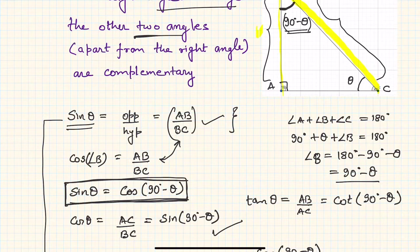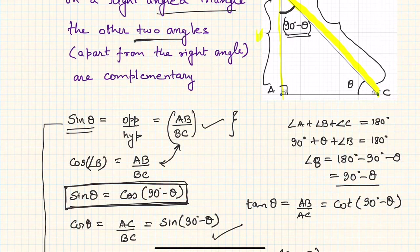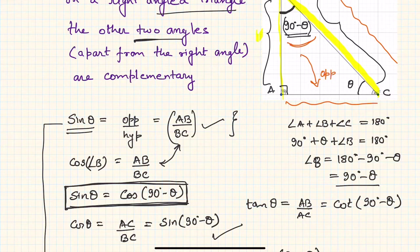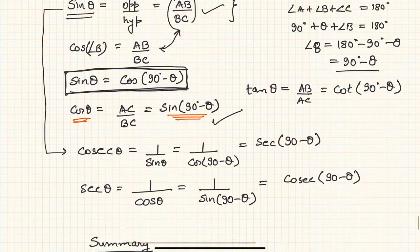Similarly, cos of theta is the adjacent side AC divided by the hypotenuse BC. For the angle 90 minus theta, the side AC is the opposite side and BC is the hypotenuse, so that ratio is sin(90 minus theta). Therefore, cos theta equals sin(90 minus theta). This is another very important relationship.